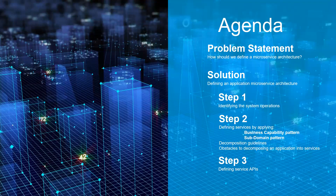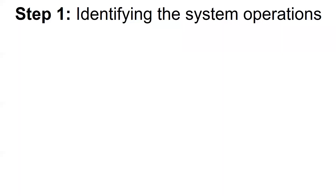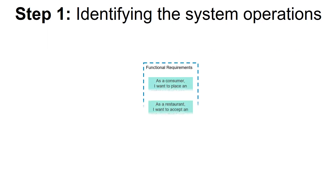Now that we abstractly present our process, it's time to go into details. So let's start by presenting the first step. The first step in defining an application's architecture is to define the system operations.